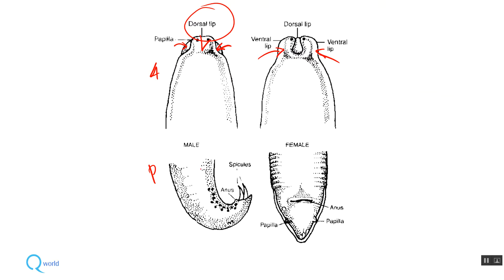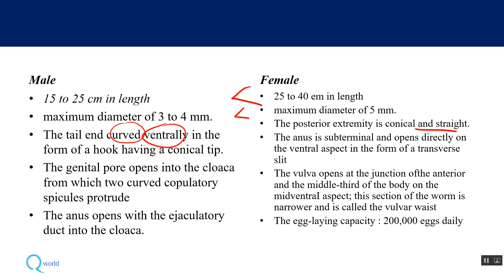Looking at the posterior end in the diagram: the male worm's tail end is curved ventrally and you can also see two spicules at the posterior end. In the female it is straight and conical in shape. The anus opens at the posterior end in both, and there are two papillae at the posterior end of the female.